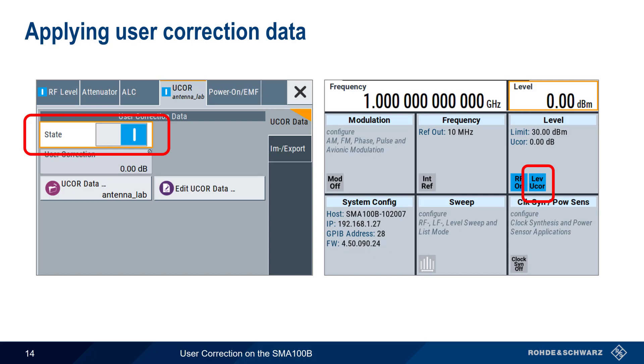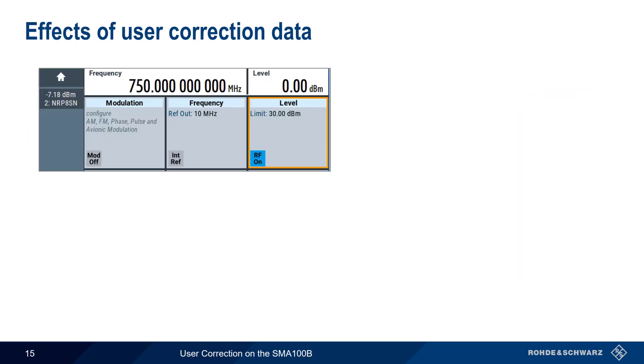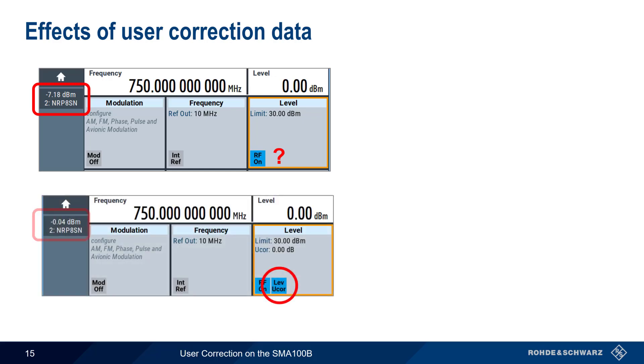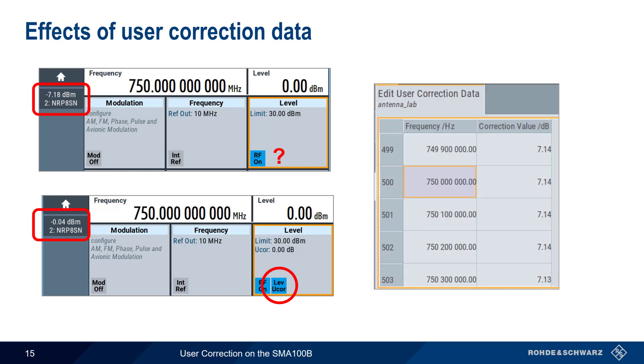Now let's take a few moments and look at the effects of our User Correction data file. With User Correction turned off, we see approximately 7.18 dB of uncorrected loss between the generator output and our power sensor. After enabling User Correction, we see only 0.04 dB of loss between the generator output and a power sensor. Looking at our correction data, we see a correction value of 7.14 dB at a frequency of 750 MHz.